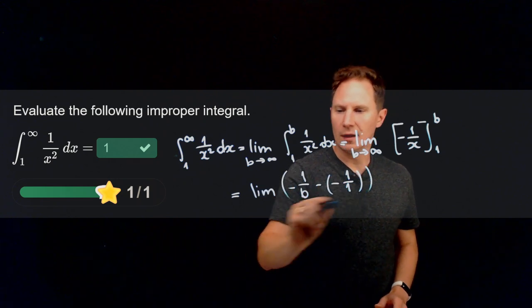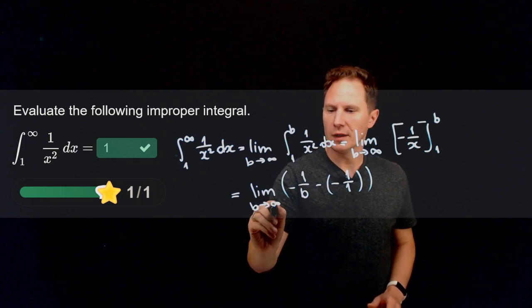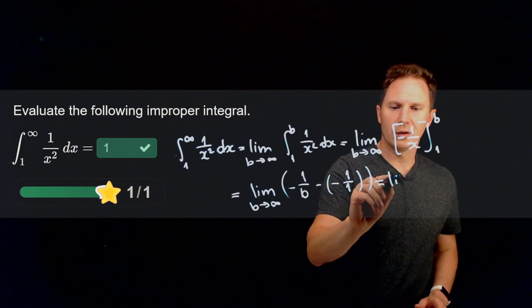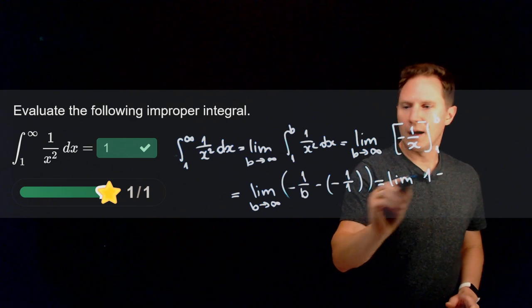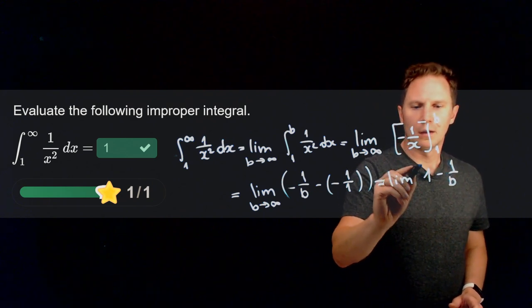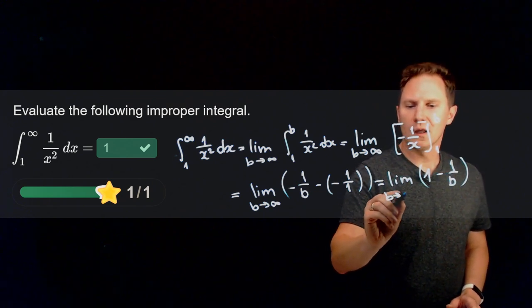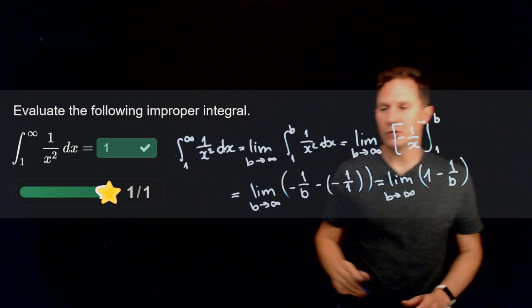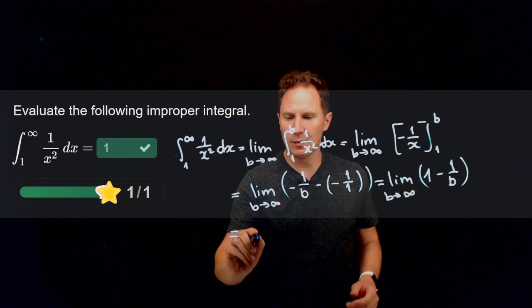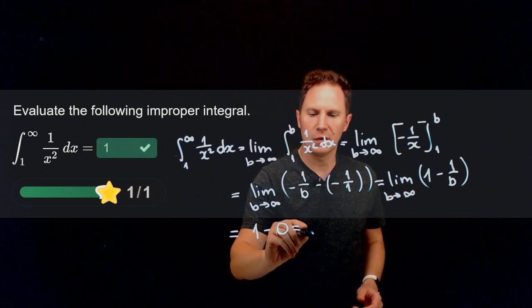We need to take the limit of this expression as b goes to infinity, but that expression is positive 1 minus 1 over b. When b goes to infinity, 1 over b goes to 0, and so in the limit we get 1 minus 0, that is equal to 1.